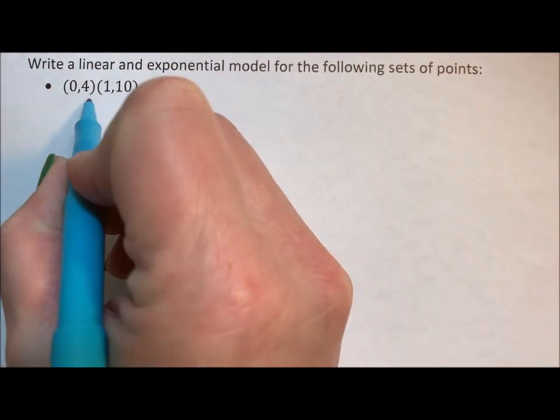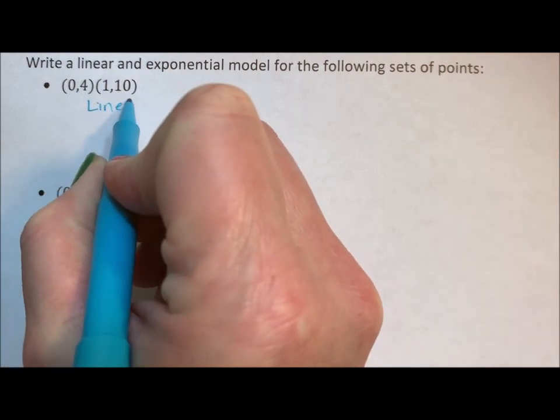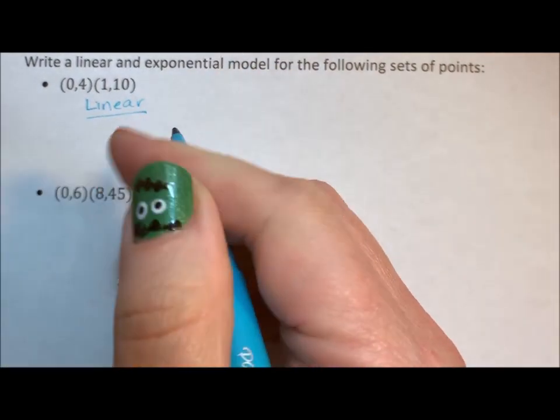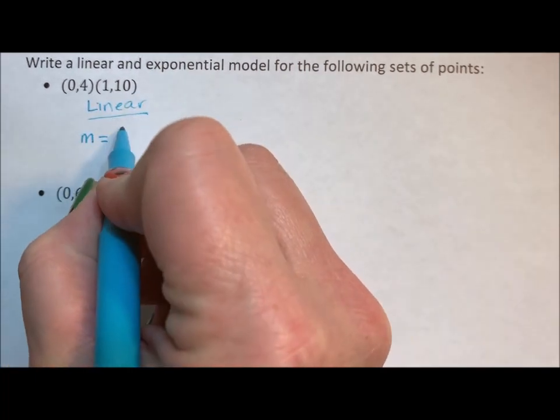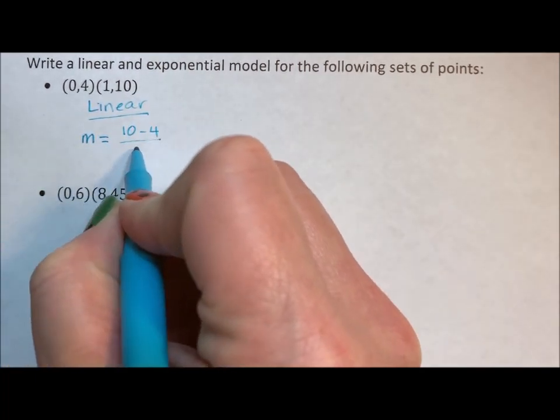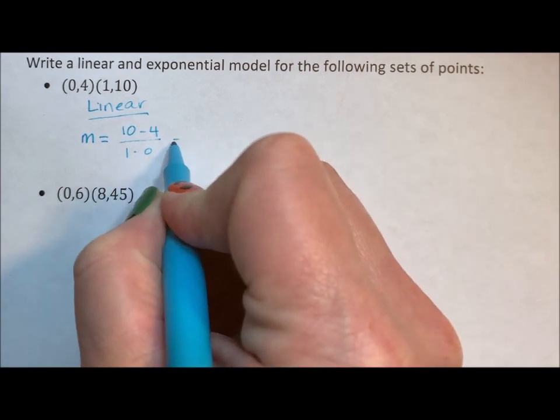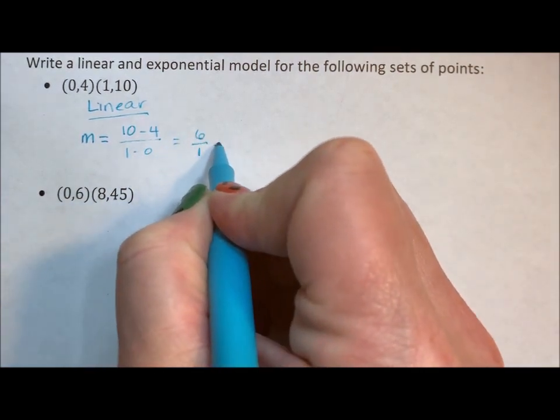So for the linear, what we're going to do is we're first going to find the slope. So the slope is 10 minus 4 over 1 minus 0, which is 6 over 1, which is 6.